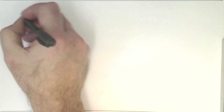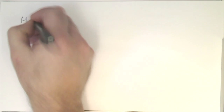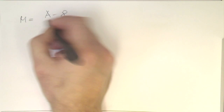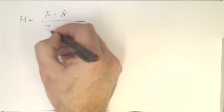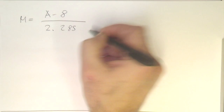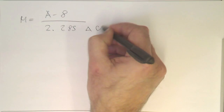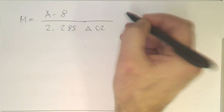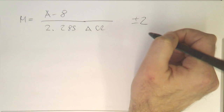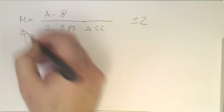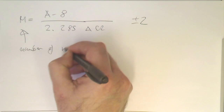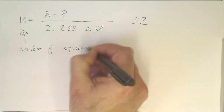We can calculate the number of taps using the formula: M equals (A minus 8) divided by 2.285 times delta omega, plus or minus two as a tolerance. This gives us the required number of taps.